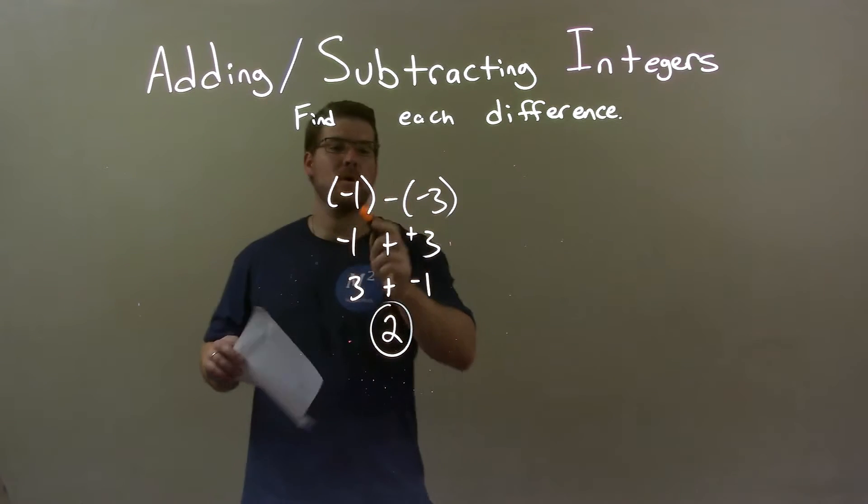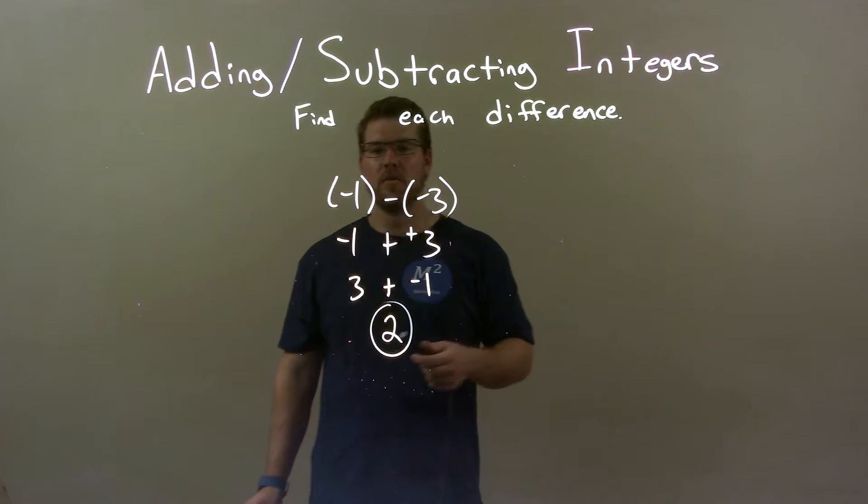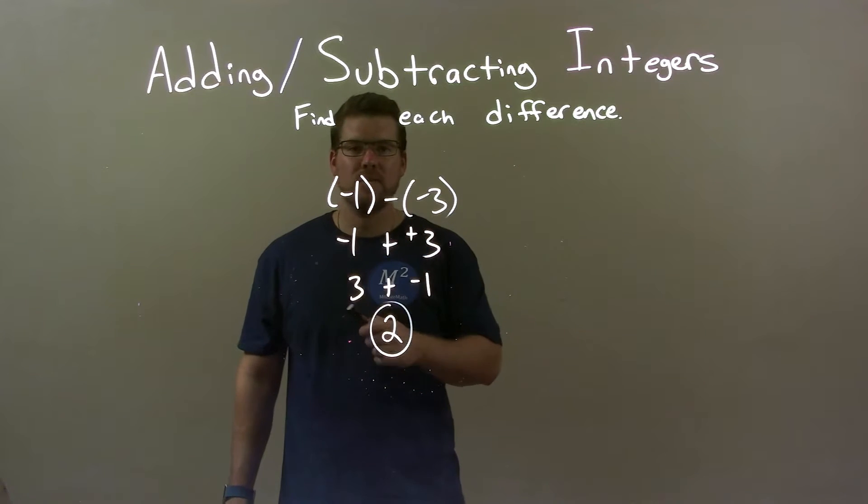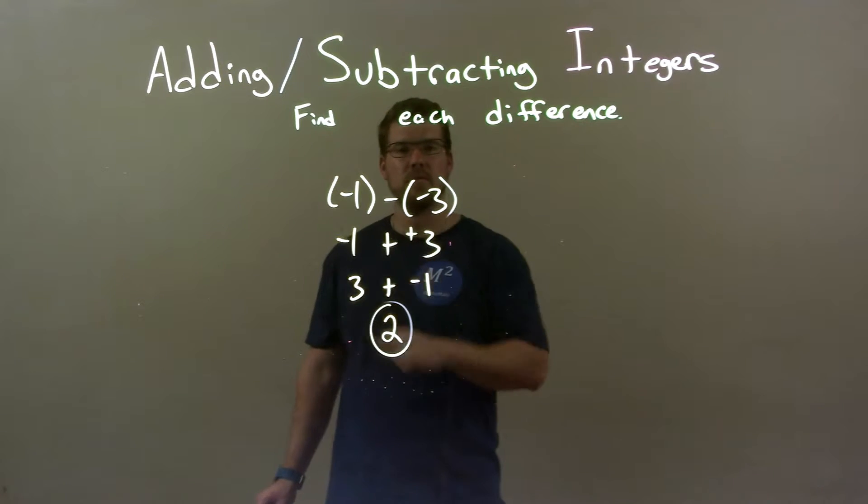Quick recap. We're given negative 1 minus a negative 3 and we have to solve that. Subtracting a negative is the same thing as adding a positive. So, we have negative 1 plus a positive 3.